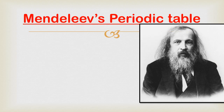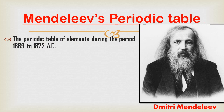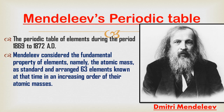The Russian scientist Dmitri Mandeliev developed the Periodic Table of Elements during the period of 1869 to 1872 AD. Mandeliev's Periodic Table is the most important step in the classification of elements because Mandeliev considered the fundamental property of elements, namely the atomic masses. Atomic mass means the addition of protons and neutrons which are there in the nucleus of the atom. He took atomic mass as a standard and arranged 63 elements, which were known at that time, in increasing order of their atomic masses.